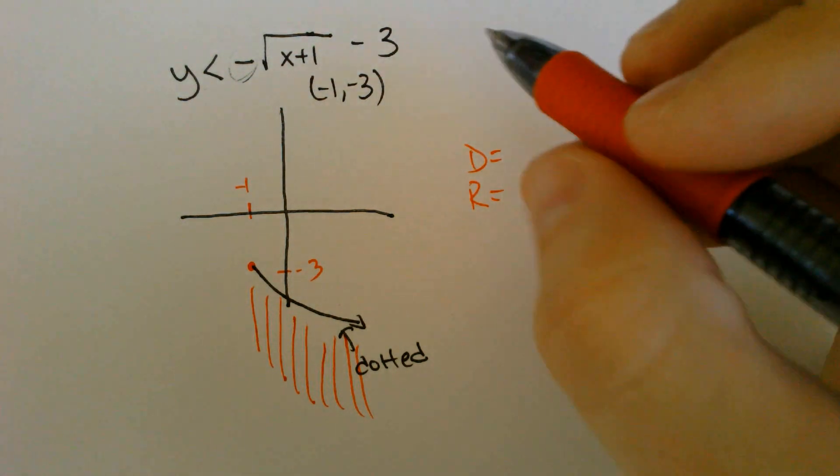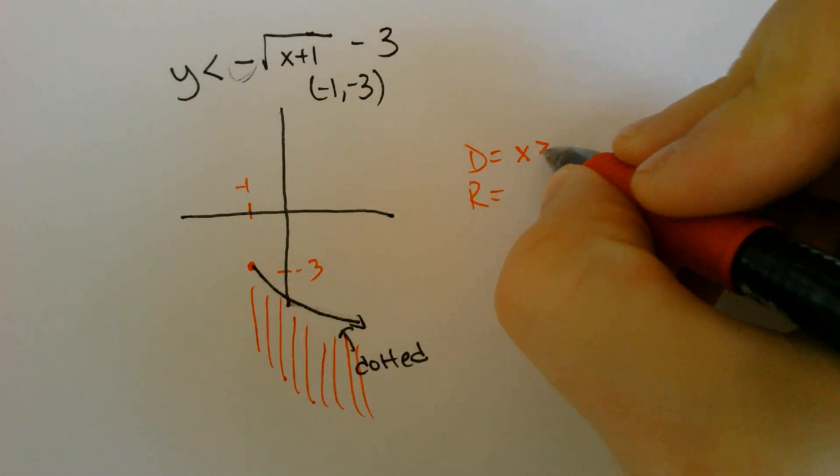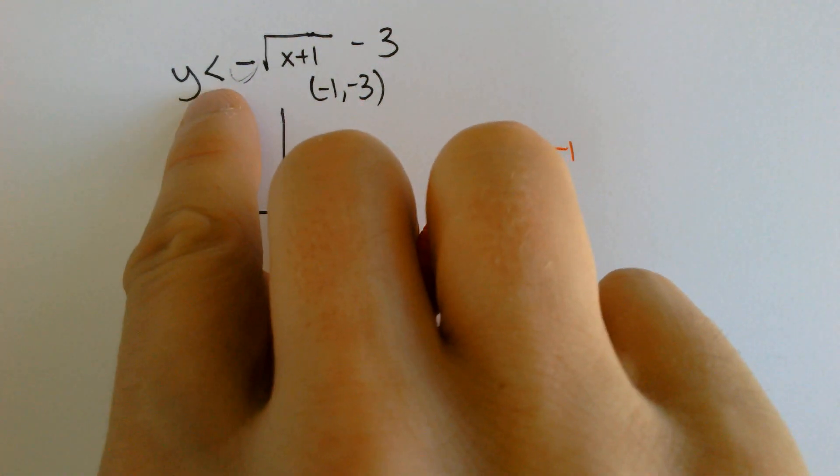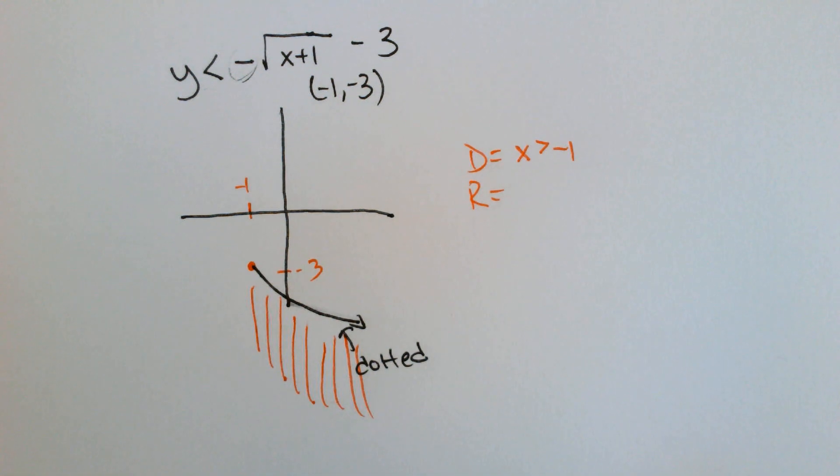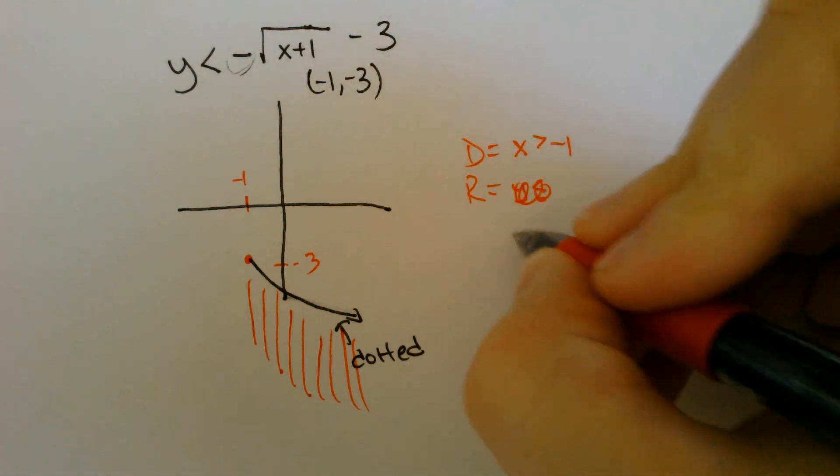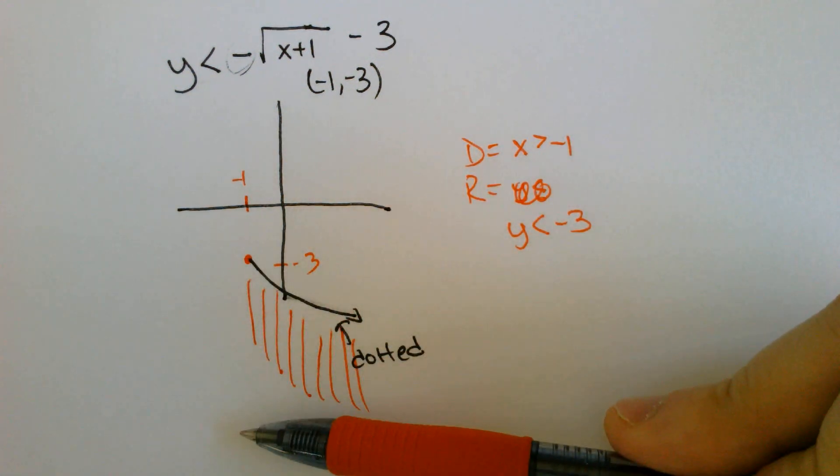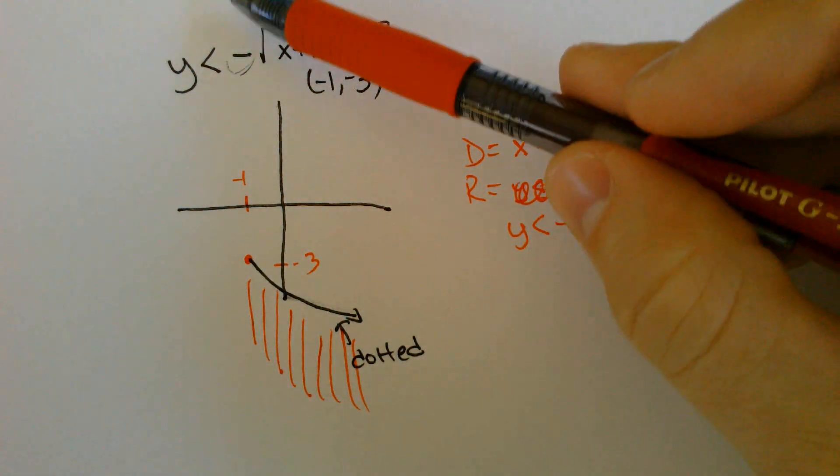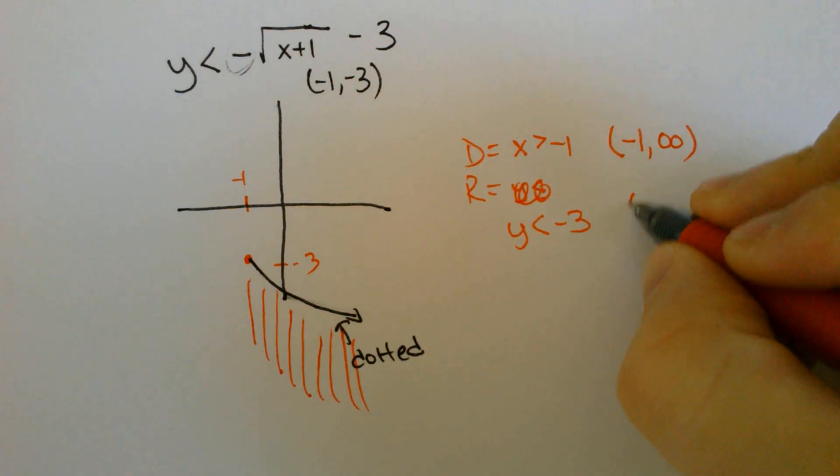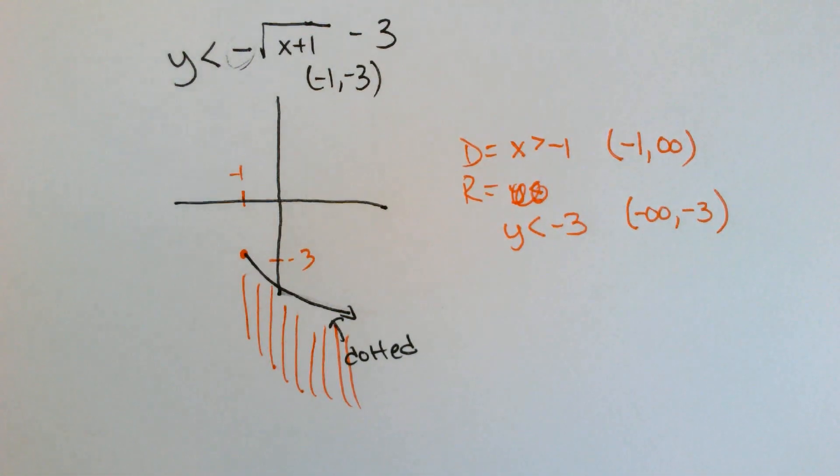Well, the domain is going to be going to the right from the x value of negative 1. So it is going to be greater than negative 1, not equal to because there's no equal to symbol. And even though this is saying less than, the x values are still going to the right. The range is relating to the y value, which is negative 3, and it is going down from the negative 3. So we are going to say less than negative 3, but not equal to negative 3 because again, no equal to symbol. So negative 1 to positive infinity and from negative infinity up until negative 3 for the domain and the range.